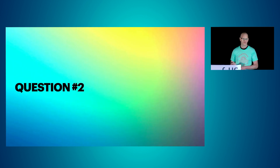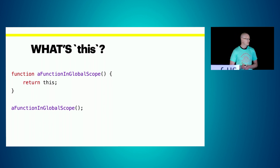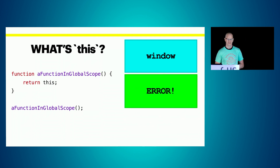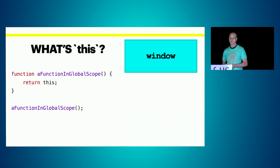Question number two, stepping it up: this is a function declared in global scope, all it does is return 'this', and then we're invoking the function. What's 'this' — is it window, is it error, or is it an empty object? If you answered window, you're right — congratulations.